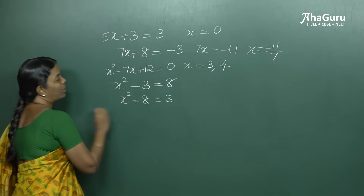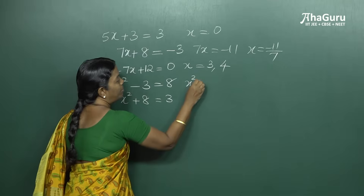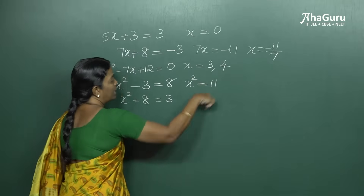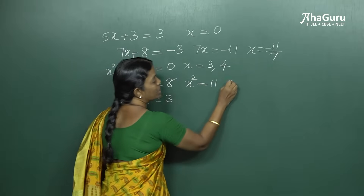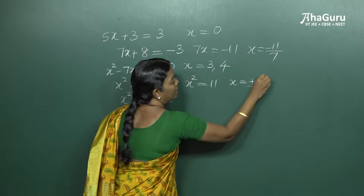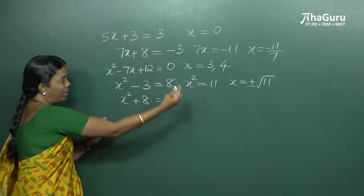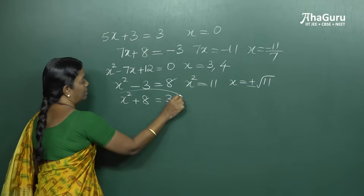For this equation, x squared becomes 11, so the solution is either plus root 11 or minus root 11.